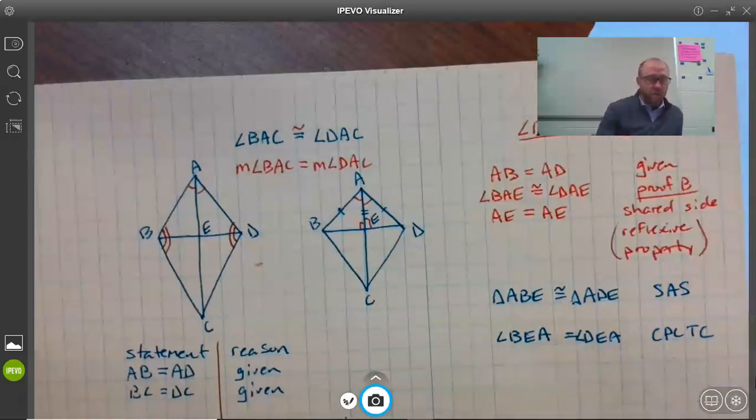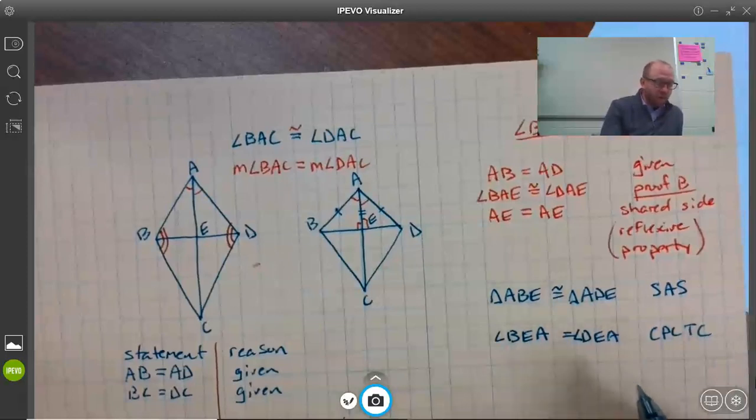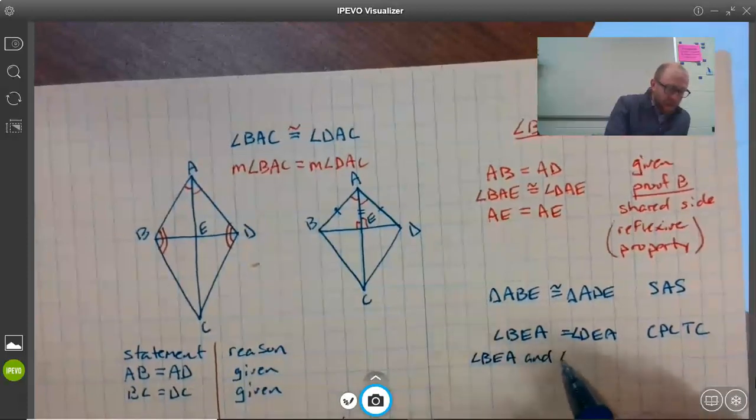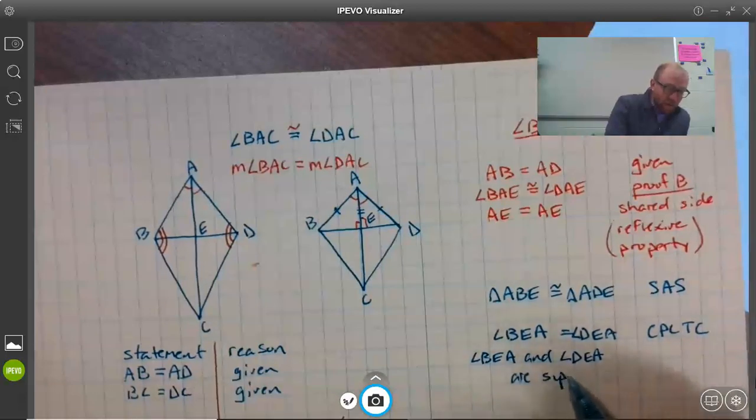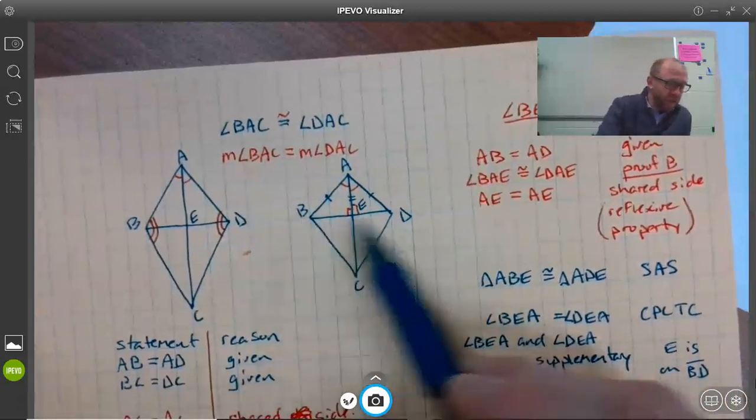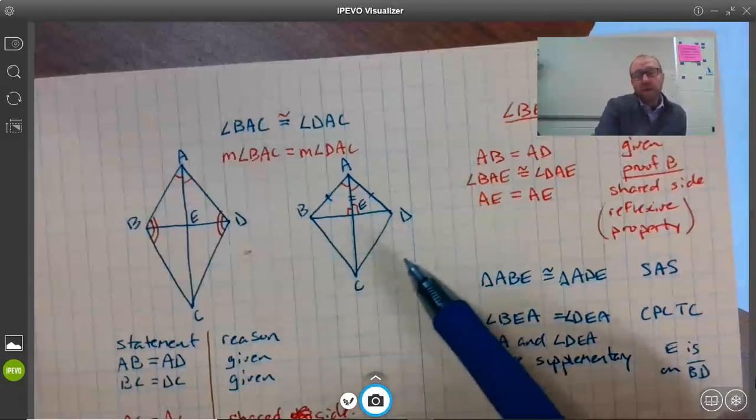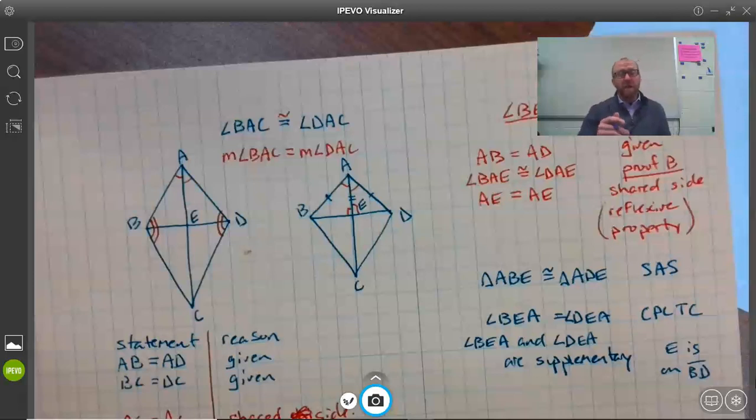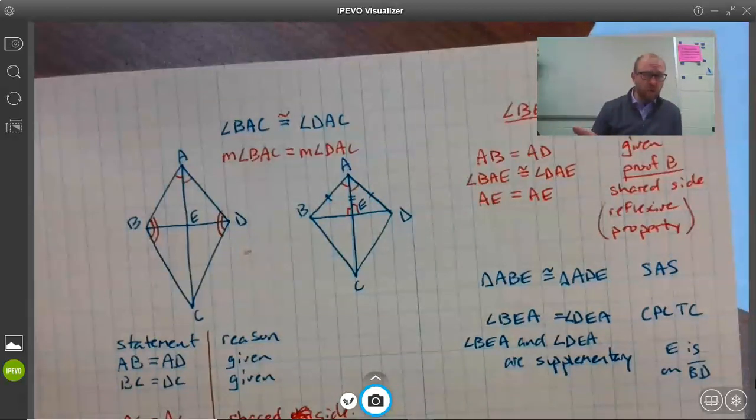Now we've got that angle BEA and angle DEA are supplementary. Our reason for knowing that is that point E is on side BD, so E is in between B and D on segment BD. Therefore, the two angles formed there are supplementary. There's a big leap there though—technically, it means they are a linear pair, which means two angles back-to-back form a straight line. Some people would bring a separate fact and say that because they're a linear pair, they are supplementary.